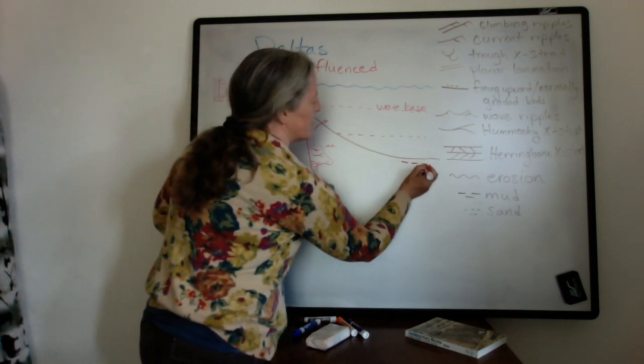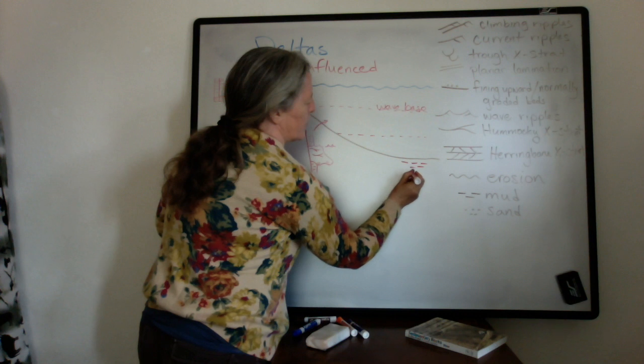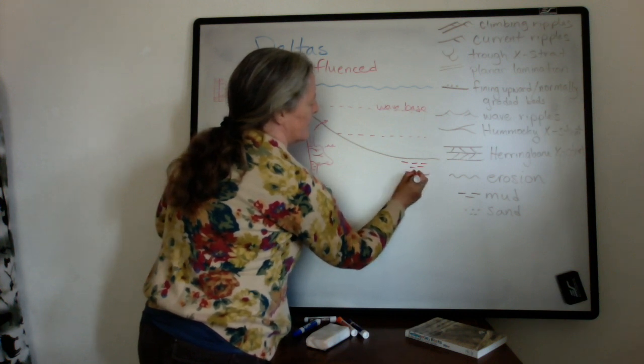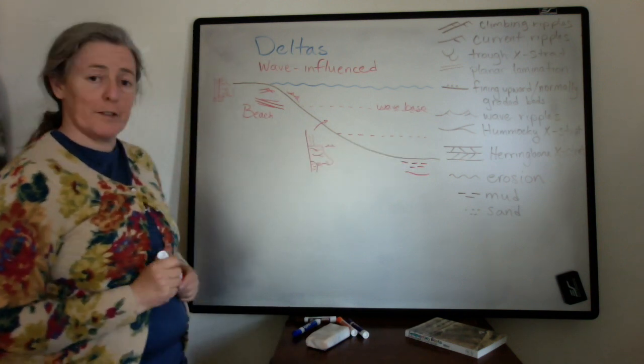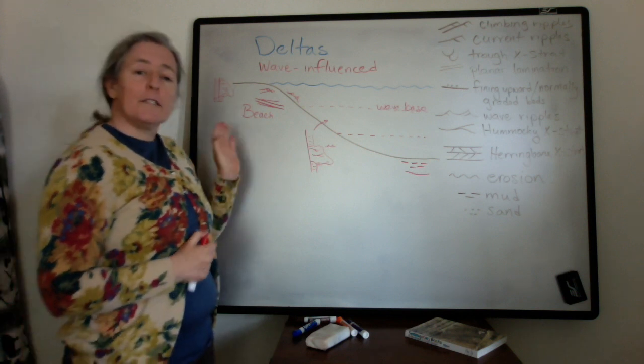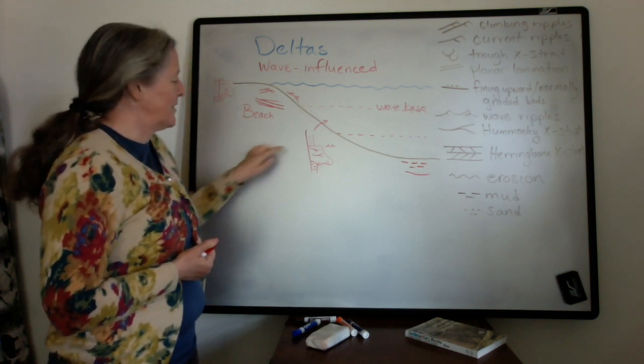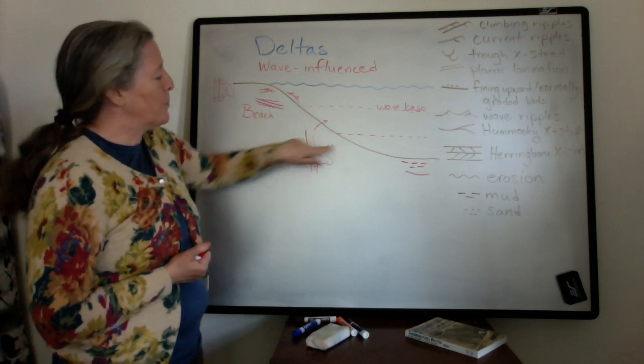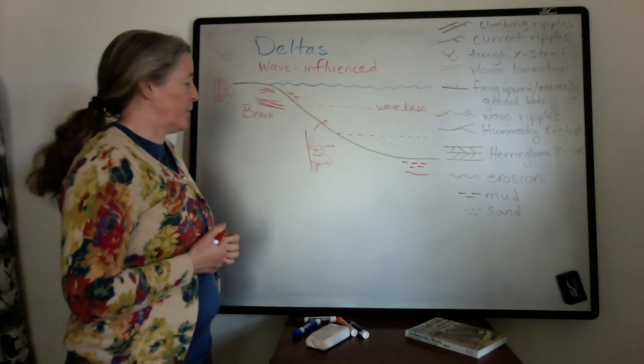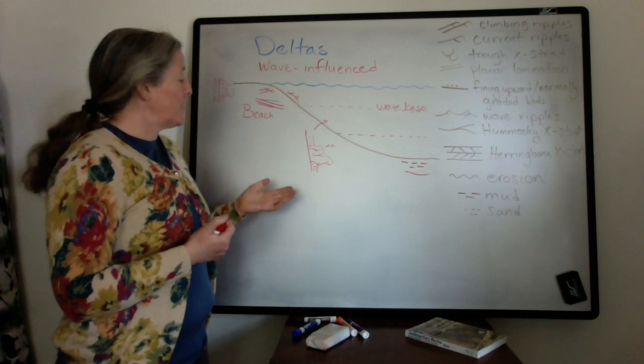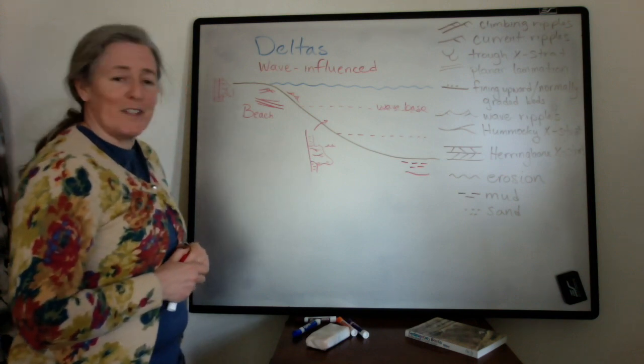And then out in the deep basin, normally accumulating mudstone, but sometimes you get these little fining upward beds that represent storm deposits that get all the way out to this zone here. So the main difference between a river dominated delta and a wave influenced delta is that the storm deposits are common offshore instead of turbidites. And you have a lot more wave ripples in the shallower environments. There are deltas that have both storms and turbidites in them, and so there are end members of the two of them.